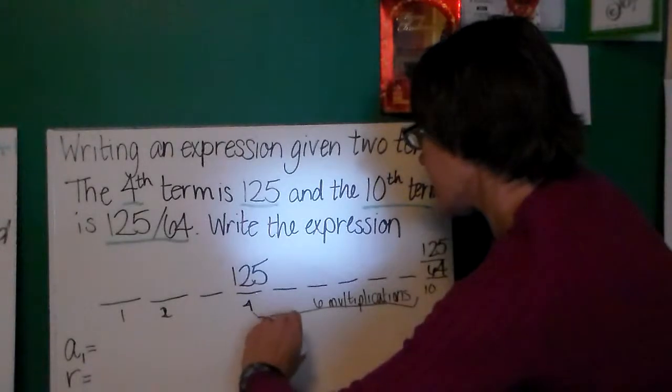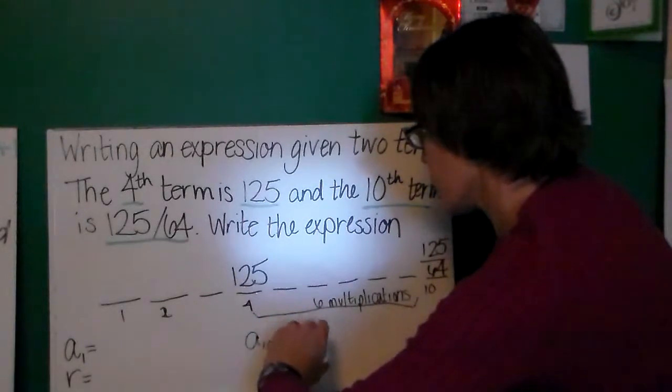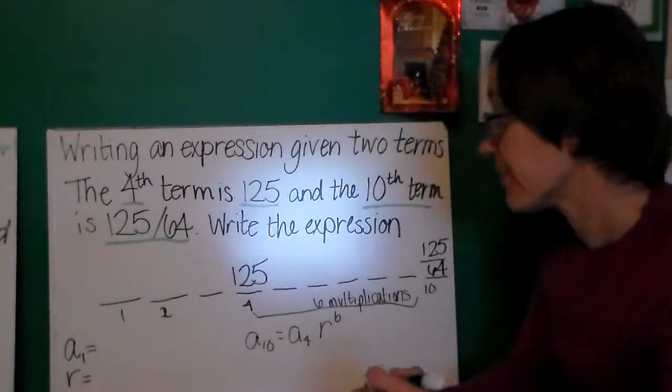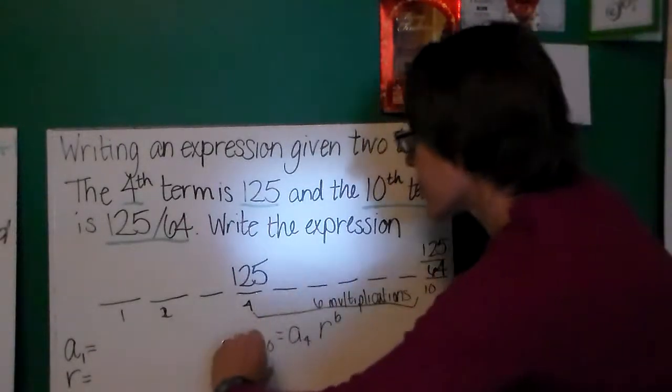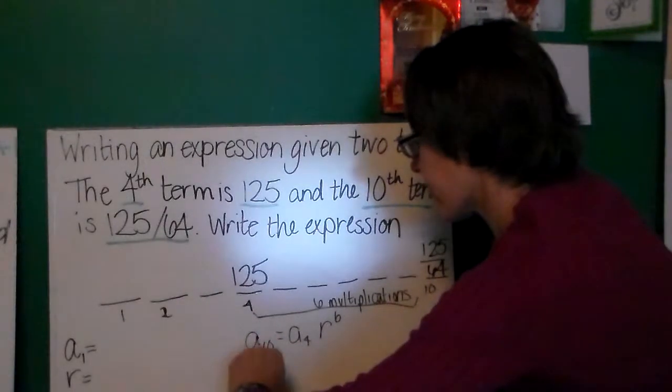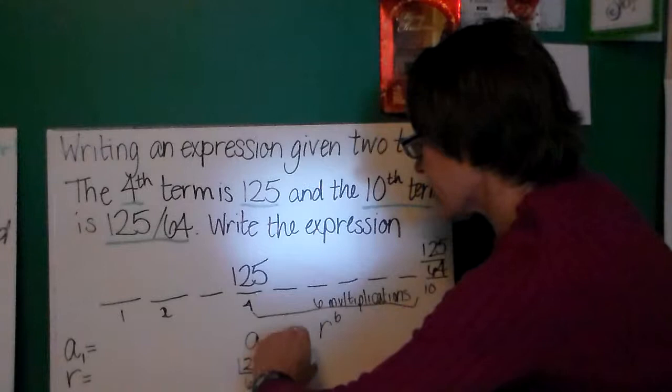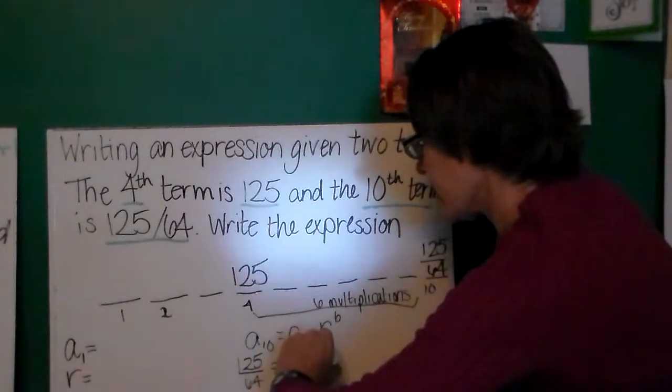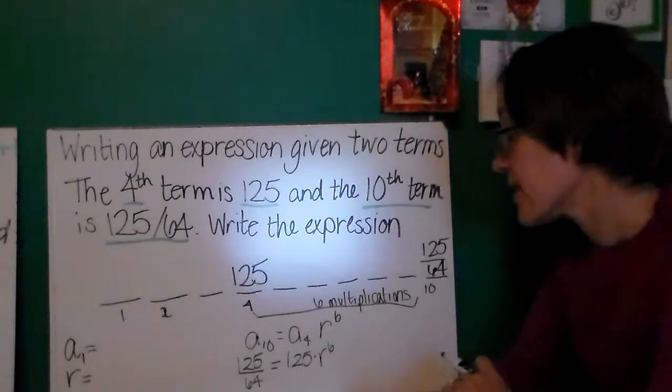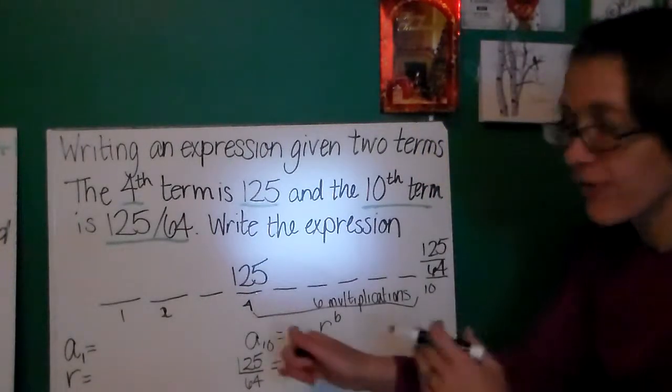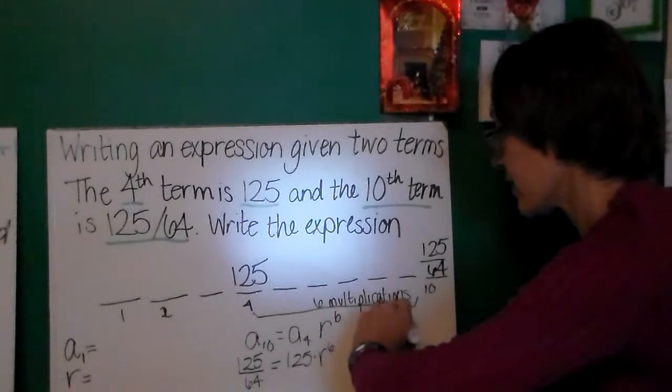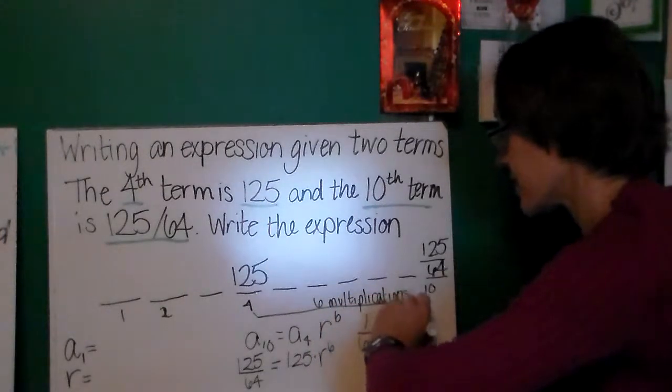So, in order to get from the fourth term to the tenth term, I've multiplied by that common ratio six times. So, I could write a_10 equals a_4 times the common ratio raised to the sixth power. Since I know these values, 125 over 64, and a_4 is 125, I can write a little equation and be able to solve for r to the sixth power. So, dividing both sides by 125, I get 1 over 64 equals r to the sixth.